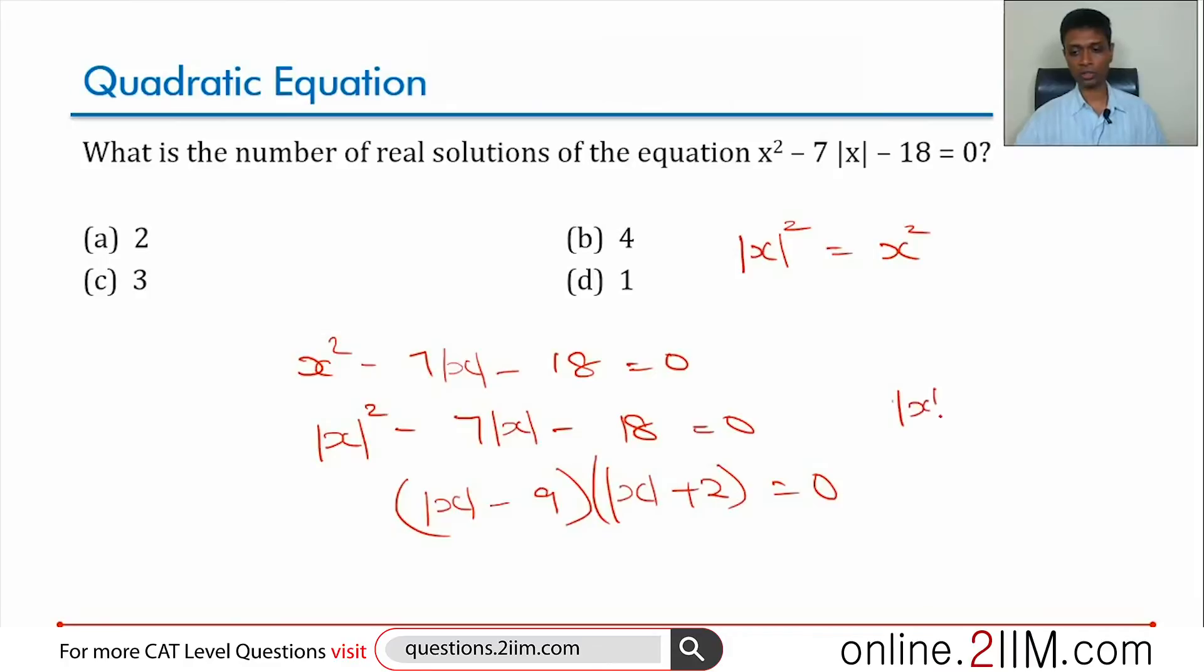So mod x can be 9 or mod x can be minus 2. That is what we get the solution as. Mod x cannot be minus 2, mod x cannot be negative, so only this solution is valid.